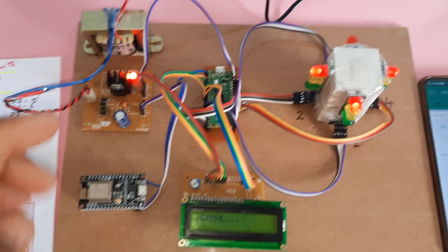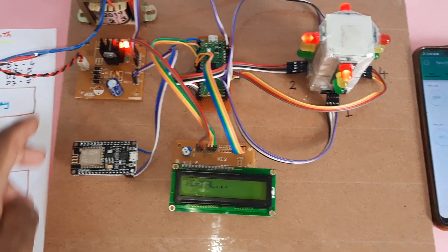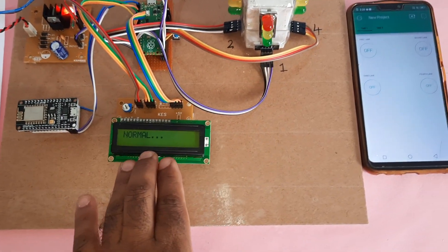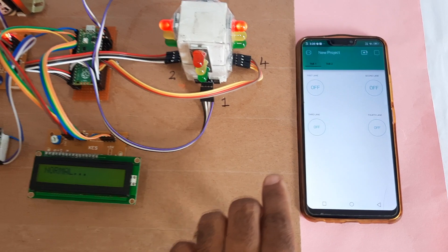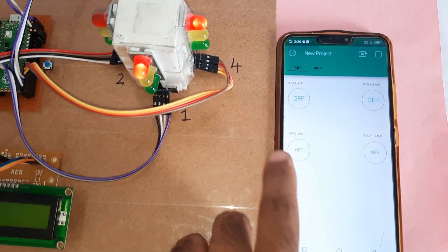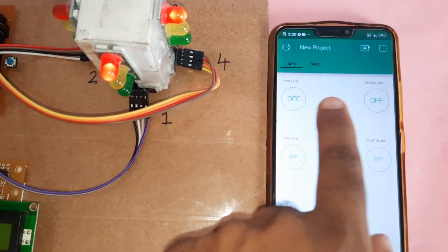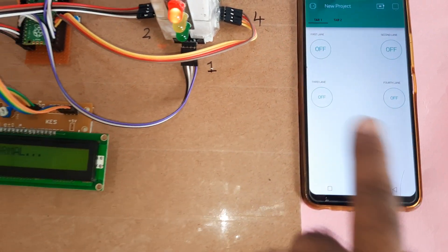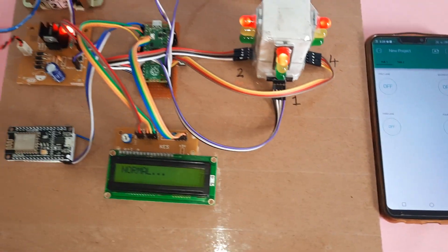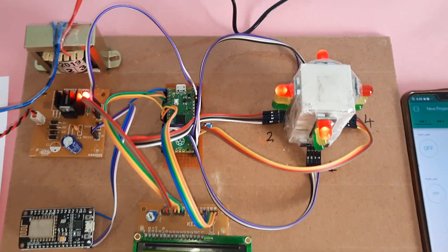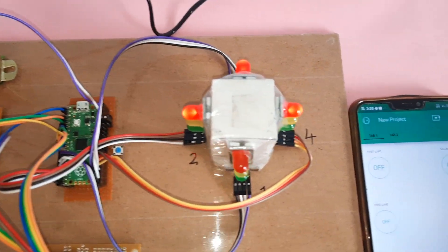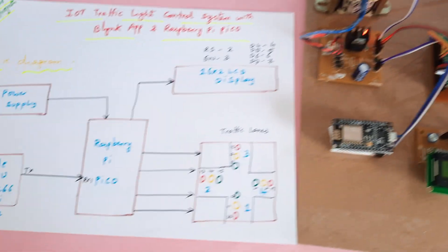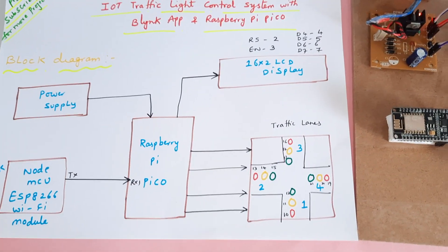Summary of the block diagram: power supply board, NodeMCU, 16x2 LCD display, and Blynk app communication for first lane, second lane, third lane, and fourth lane. The Raspberry Pi Pico manages the four-way junction — this is our complete block diagram.